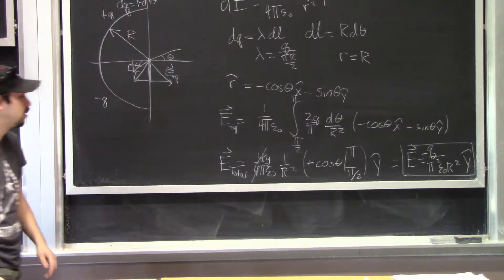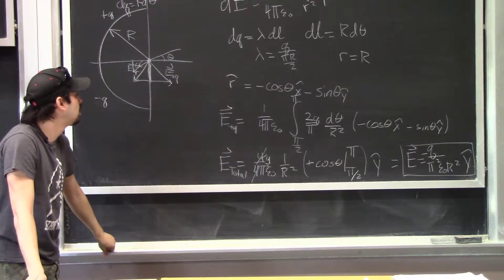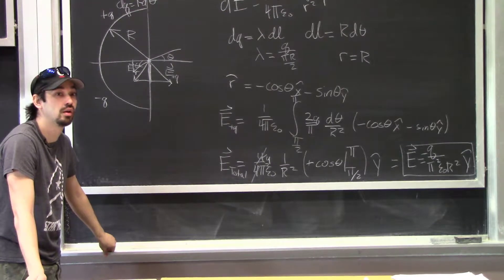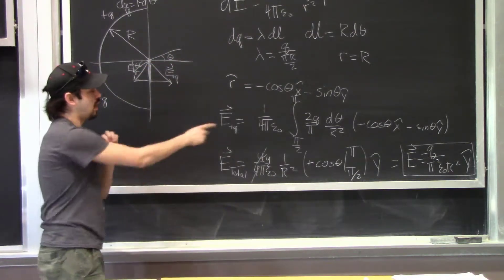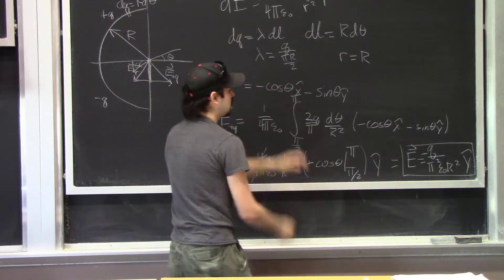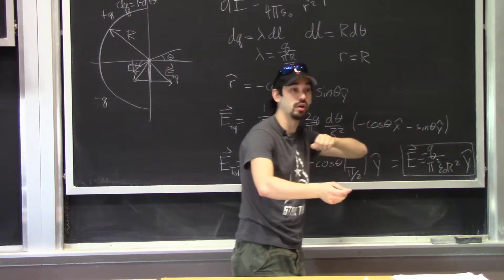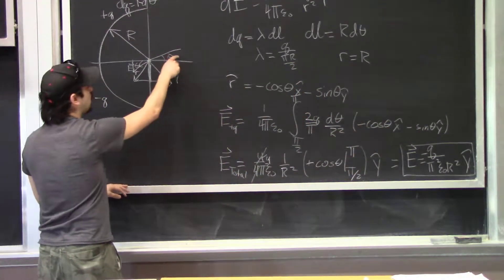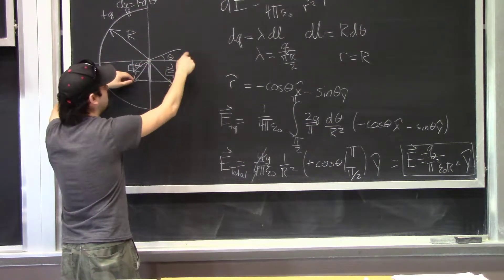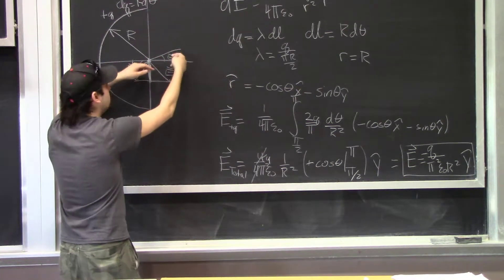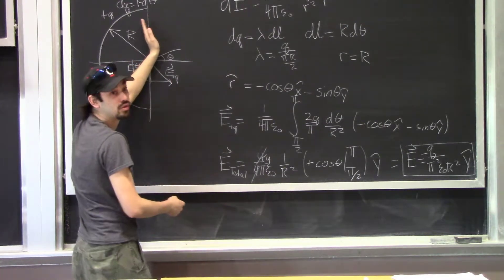Student question: when finding limits of integration, which angle do you use? It's the angle from the positive X axis, and it's very important that these limits and the way you're defining R-hat talk to each other. The way I defined R-hat, θ was from the positive X axis, so the charge on the top arc begins at π/2 and goes to π.